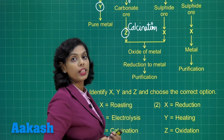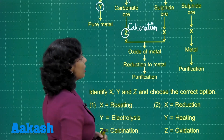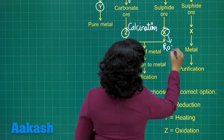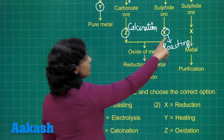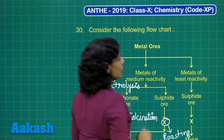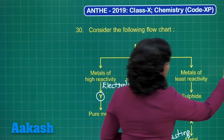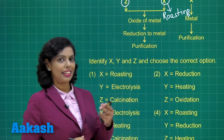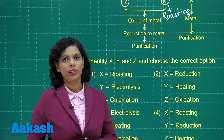If you have sulfide ore of that metal, you roast it — the process is roasting, in the presence of oxygen supply. So X is the process of roasting. Similarly, if you have the sulfide ore of metals of least reactivity, the process of roasting also occurs. So we have identified: X is roasting, Z is calcination, and Y is electrolysis.